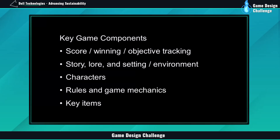These are the core components of any game: the score, objective tracking or win mechanics, the mechanics to play the game itself, the rules, the game mechanics, the story, the lore, the setting and the environment in which the game occurs, the characters which participate in that game, and then any key items that are core to the game and the mechanics.